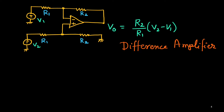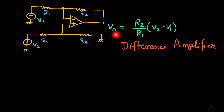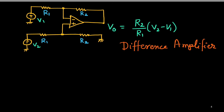First we will compare with the standard difference amplifier. In a standard difference amplifier with resistances R1 and R2, the gain is R2 upon R1. If you want to vary the gain then you have to tune either R2 or R1, but you have to tune both resistances simultaneously. It is very difficult to tune both resistances simultaneously with the same proportionality, so there could be some mismatch, and you will find not only differential gain but also some common mode gain at the output. This is the problem with the standard difference amplifier.